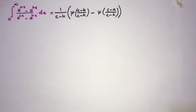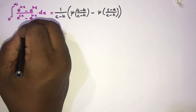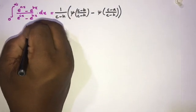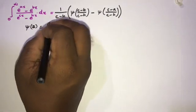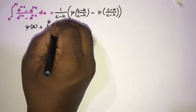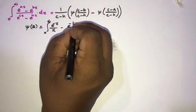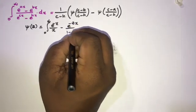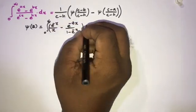First I'm going to take the definition of the digamma function. We can write the digamma function as an integral: ψ(c) equals the integral from 0 to infinity of (e^(-x)/x - e^(-cx)/(1 - e^(-x))) dx.